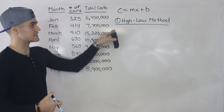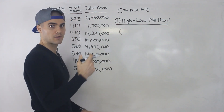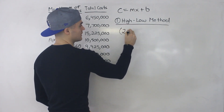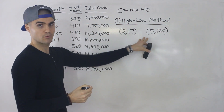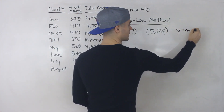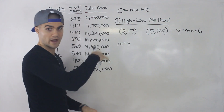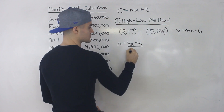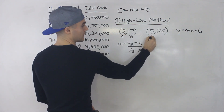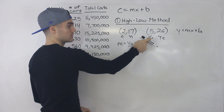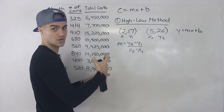The first method I want to go over is the high-low method. To describe it, I want to do a review of some high school math. Let's say we're given two points on a line: (2, 17) and (5, 26). We have to take these two points and make an equation y equals mx plus b. We can label them x1, y1 and x2, y2 — just make sure whenever you have an x1, you've got a y1 there.